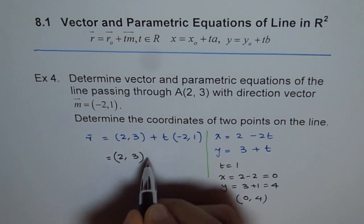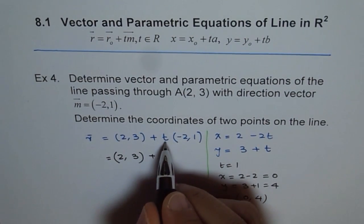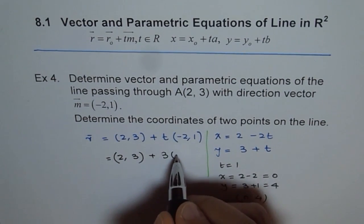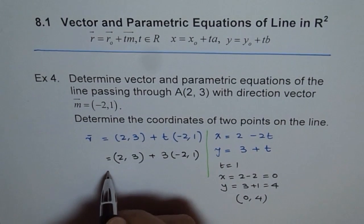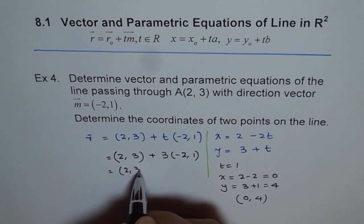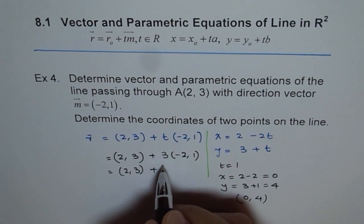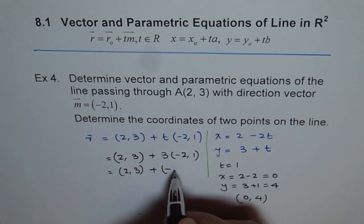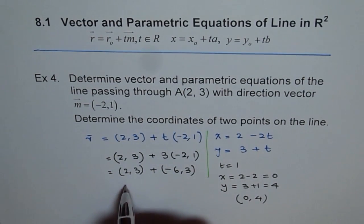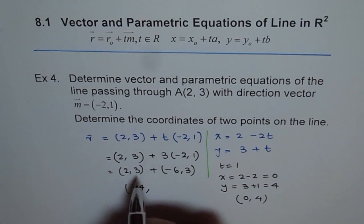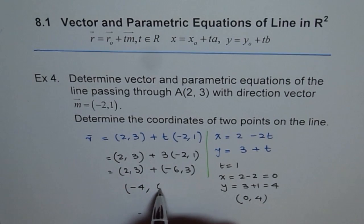So we get (2,3) plus, this gives us (-6,3). Therefore, our coordinate point is 2 minus 6, which is -4 and 3 plus 3, which is 6. So these are the two points.